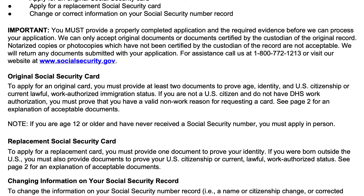If you're not a U.S. citizen and you do not have DHS work authorization, you must prove that you have a valid non-work reason for requesting a card. We'll get to some examples of acceptable documents on page two. If you're age 12 or older and you've never received a Social Security number, you must apply in person.